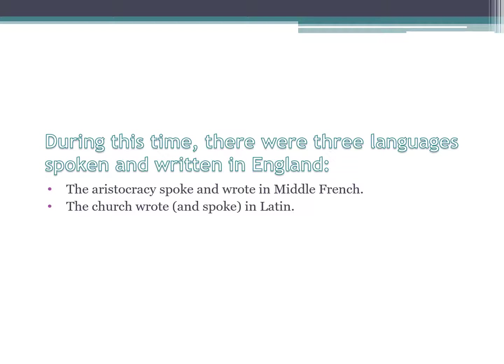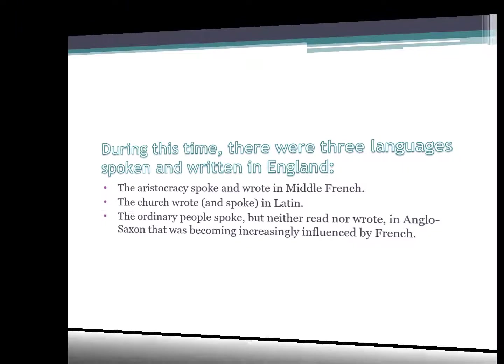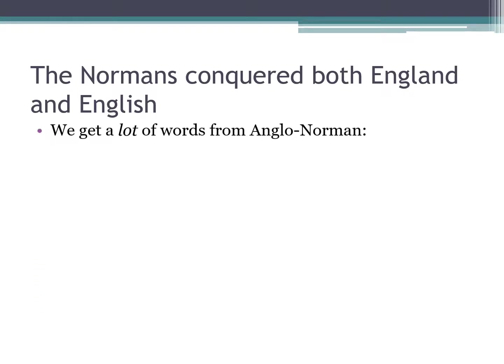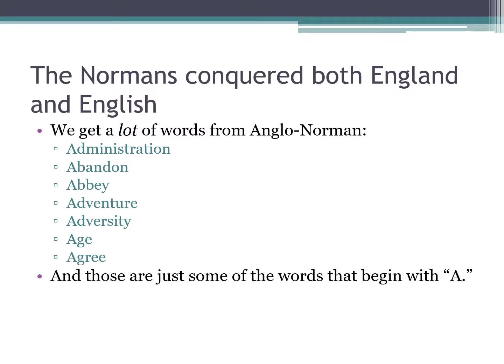That is England during this time — three languages spoken and written. The aristocracy spoke and wrote in Middle French. The church wrote and spoke in Latin — in fact, the church continued most of its business in Latin until the 1960s, only 50 years ago including additional languages. The ordinary people spoke, but neither read nor wrote, in Anglo-Saxon that was becoming increasingly influenced by French. The Normans conquered both England and English, and we get a lot of words from Anglo-Norman: administration, abandon, abbey, adventure, adversity, age, agree — and those are just some beginning with A.